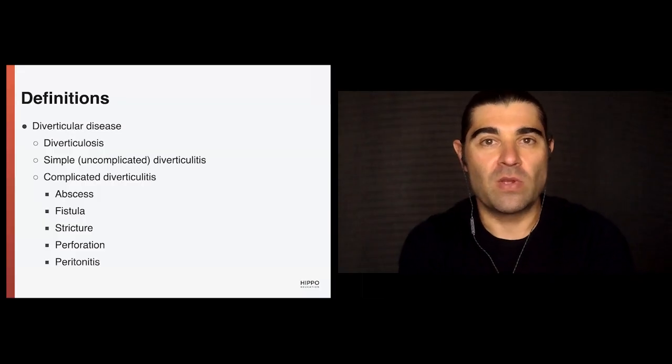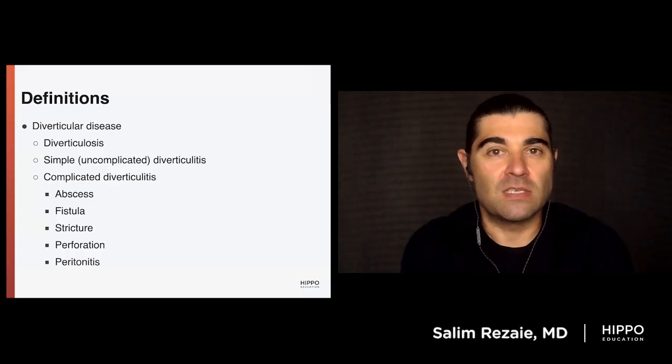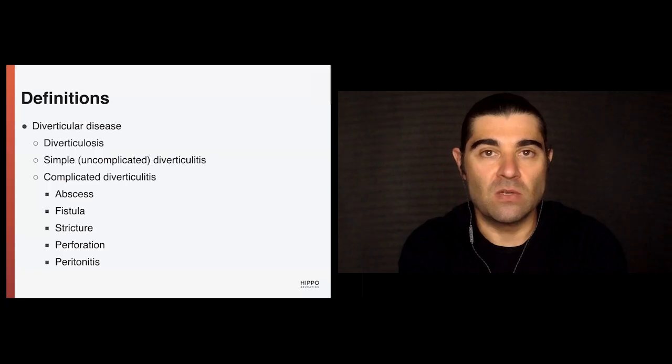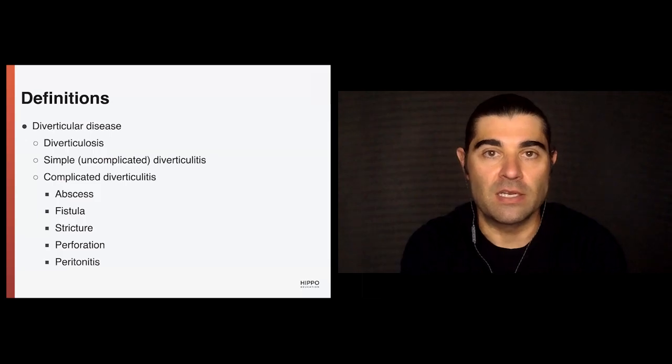Every time I think I know what I'm doing, I read a paper like this and pick up some new pearls that I maybe learned at some point and kind of forgot along the way. The first thing is that diverticular disease is truly a spectrum — it starts as diverticulosis, can be acute uncomplicated diverticulitis, and then can become complicated diverticulitis.